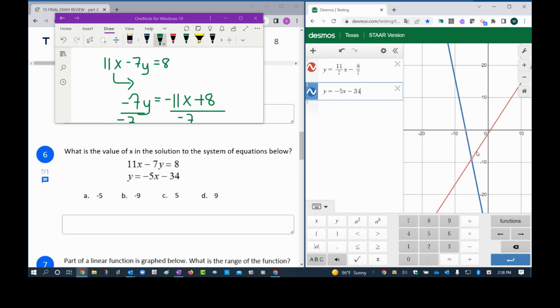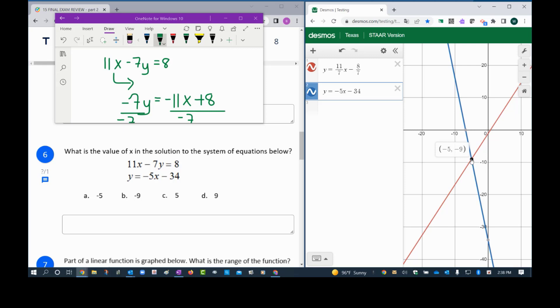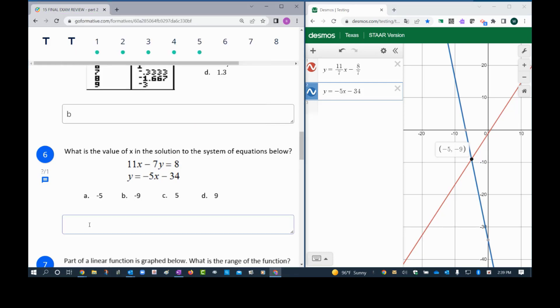This is the second line, so let's click right there. Y equals negative 5x minus 34. Now that we have that, we notice the two lines cross each other and the answer is negative 5, negative 9. Notice that we're looking for the value of x, so the value of x is negative 5.